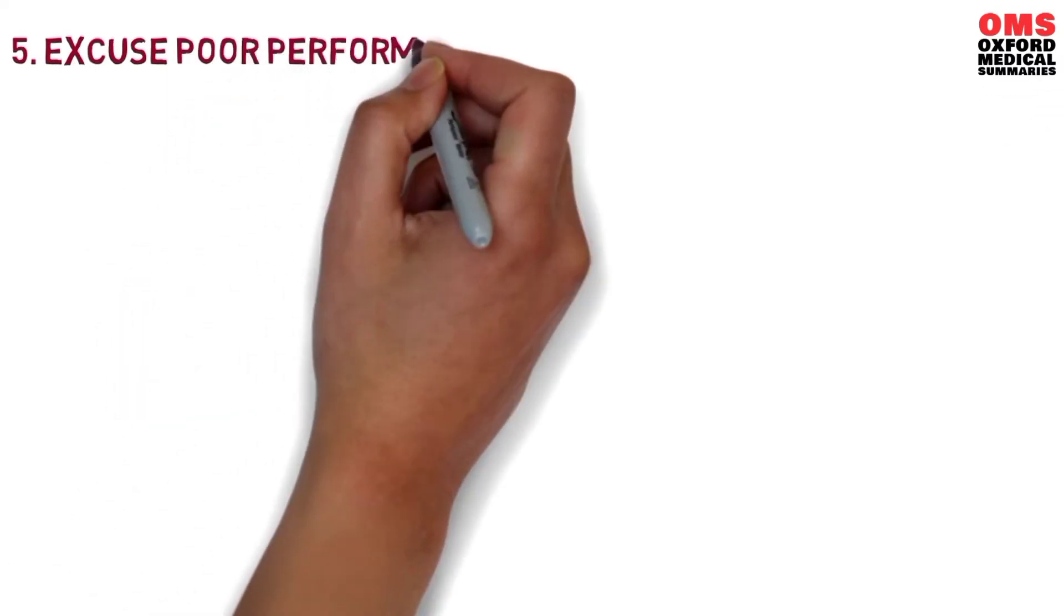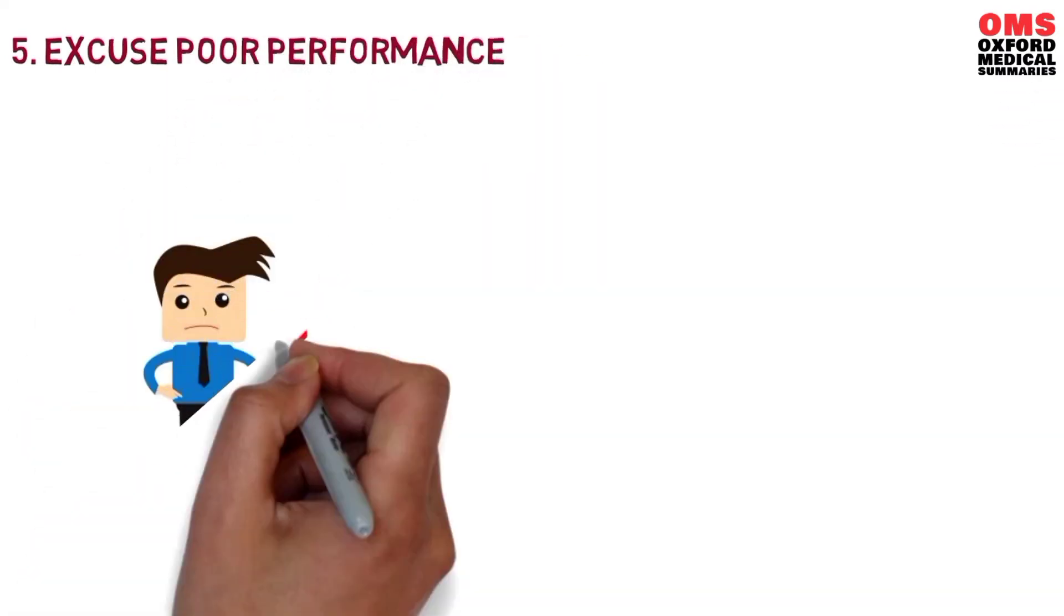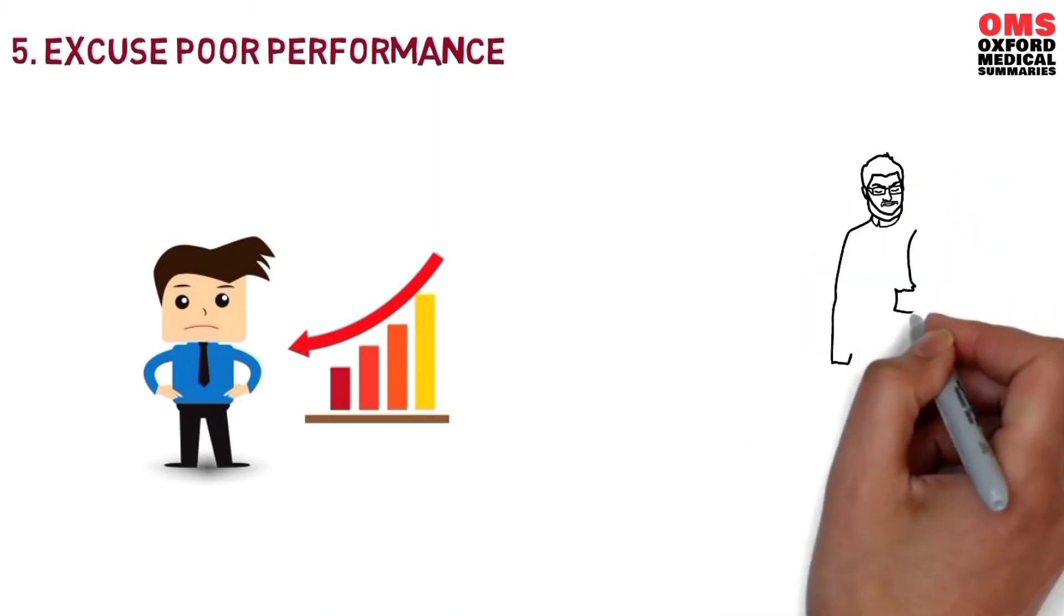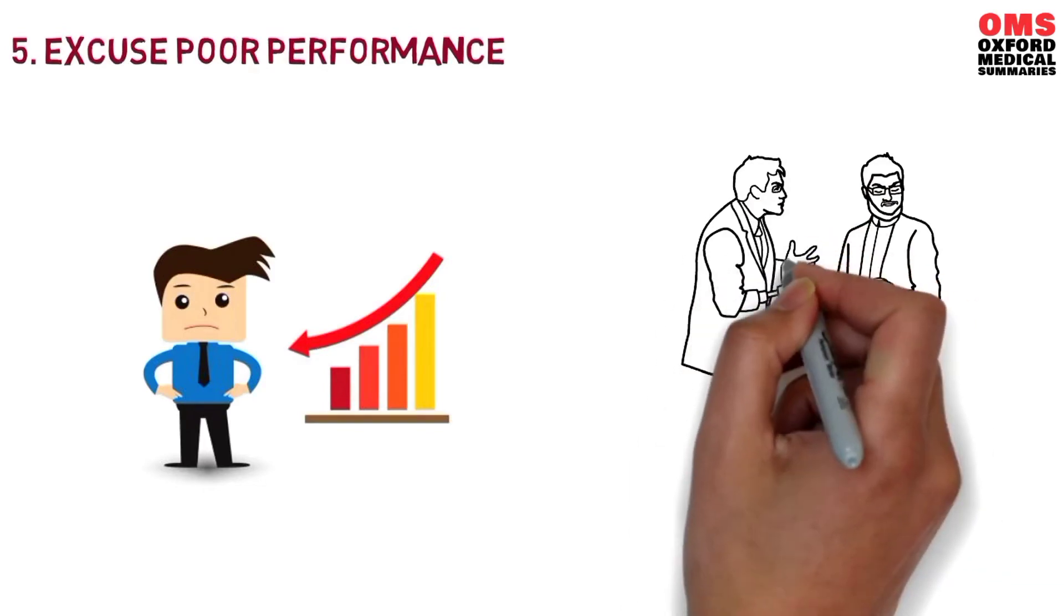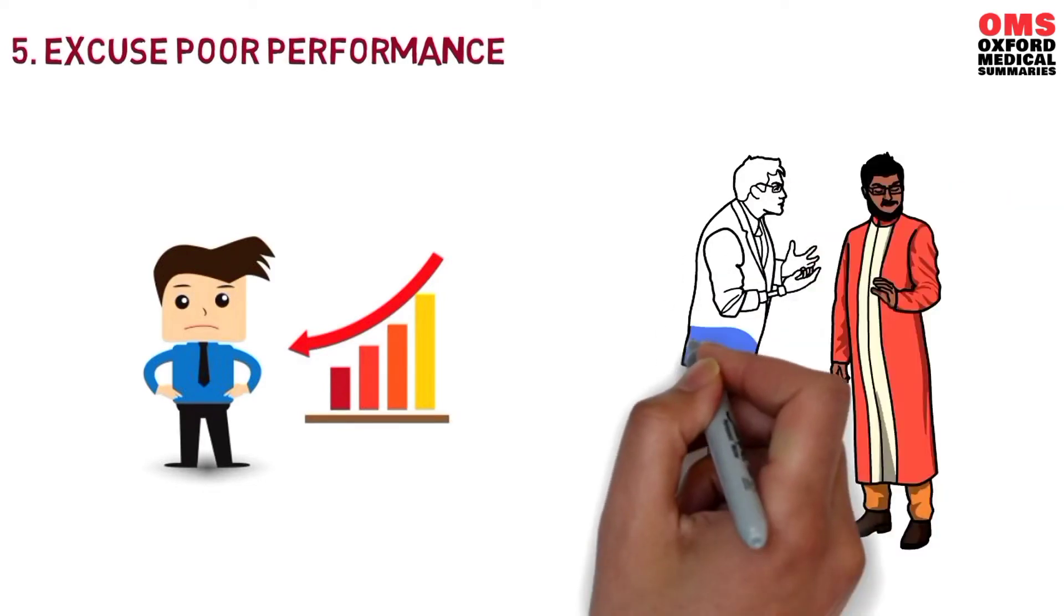Number five, excuse poor performance. Unlike the person complaining to justify inaction, a person complaining to excuse his or her poor performance complains about circumstances after the fact to explain away failure, i.e. making excuses.